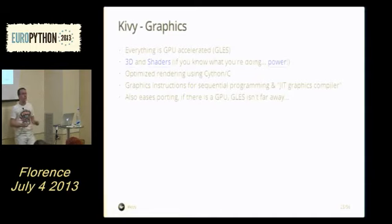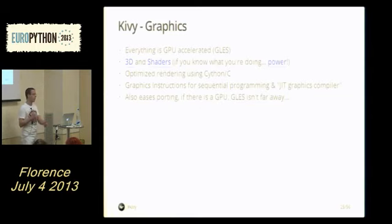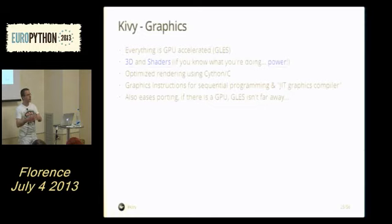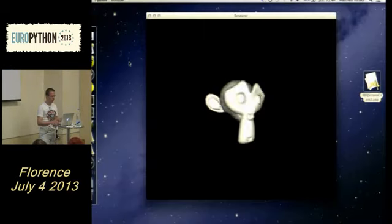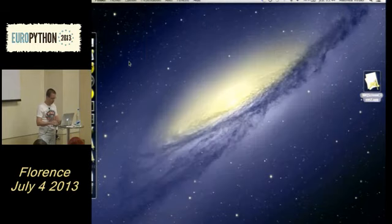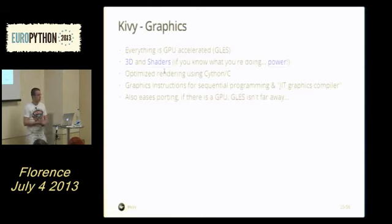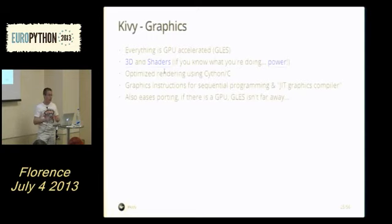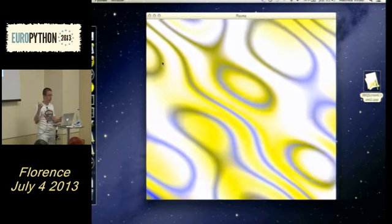Last year we could only do 2D graphics. Now we've added the ability to change the vertex format, adding a Z component, and you can customize vertex formats — so now we can do 3D. OpenGL ES 2 doesn't have direct rendering; you always need a shader. Our default shader handles texturing and vertices, but you can write your own shaders.